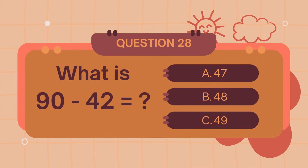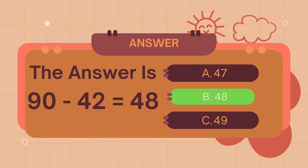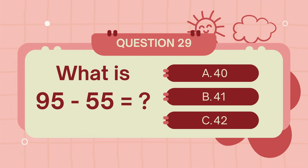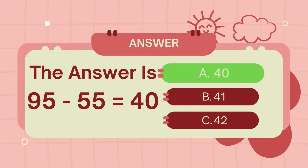What is 90 minus 42? The answer is 48. What is 95 minus 55? The answer is 40.